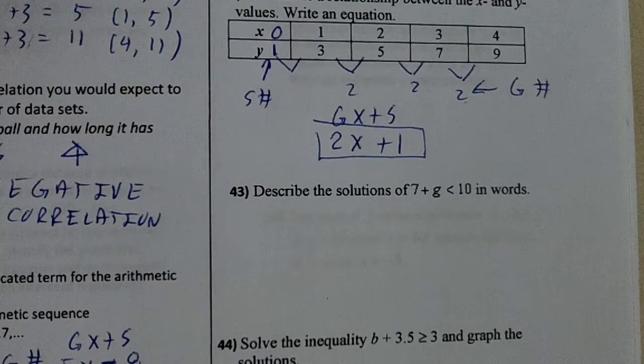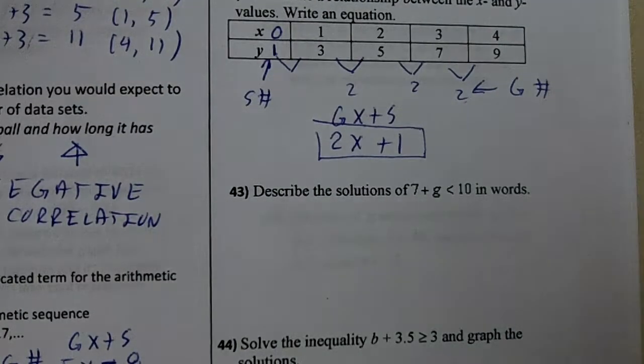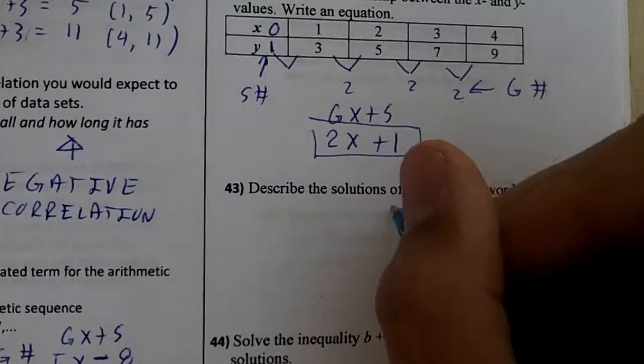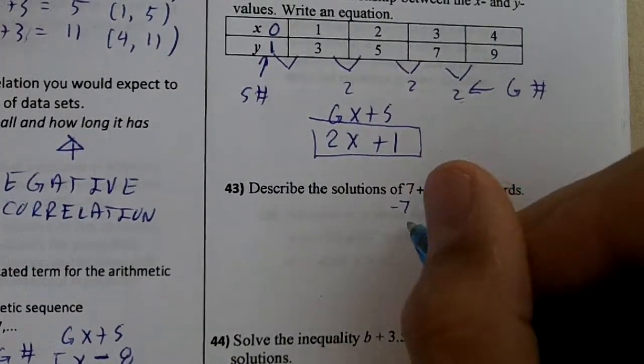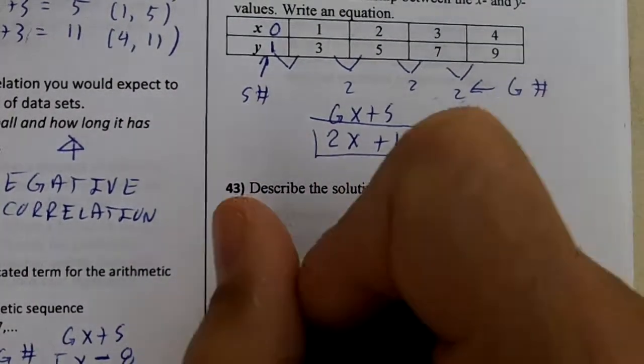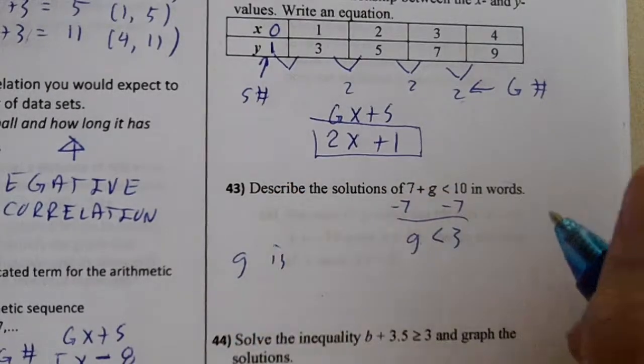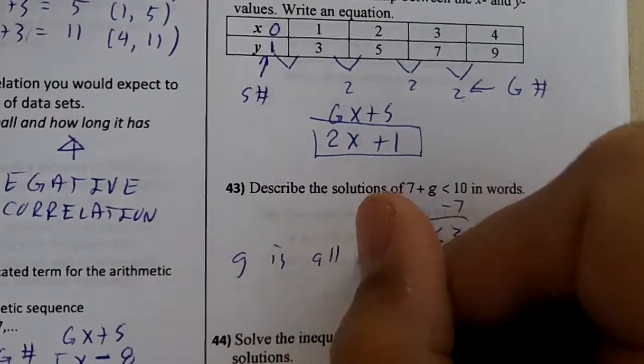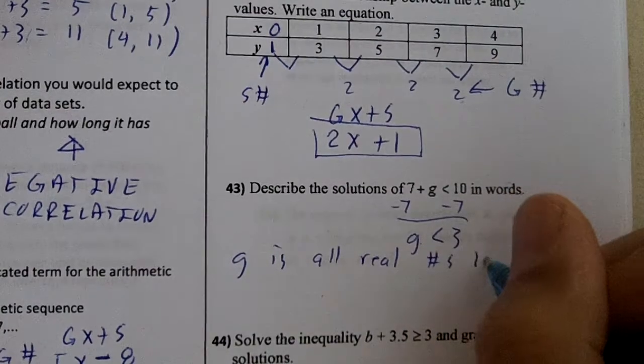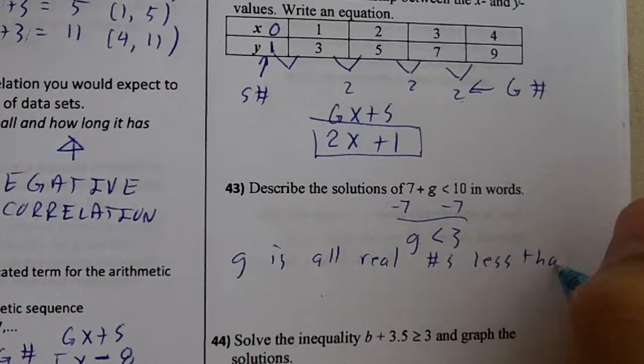Lastly, on number 43, describe the solutions of 7 plus g less than 10 in words. Subtract 7, you would get g less than 3. This means that g is all real numbers less than 3.